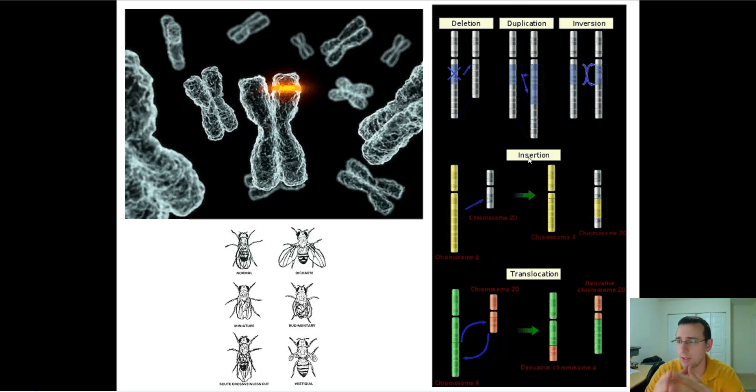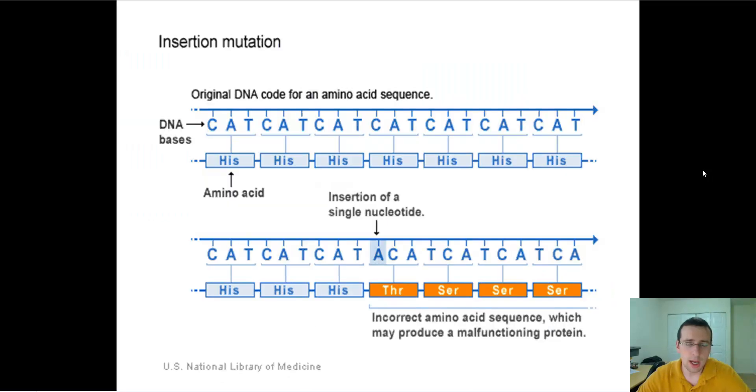So, for example, us and gorillas cannot make a viable baby because we have a different number of chromosomes.